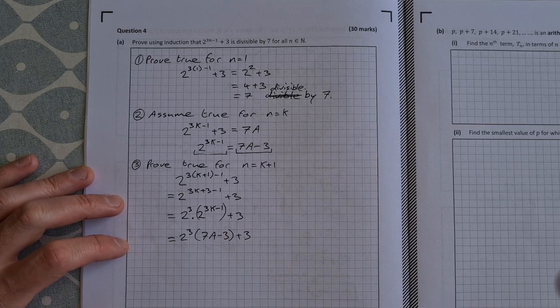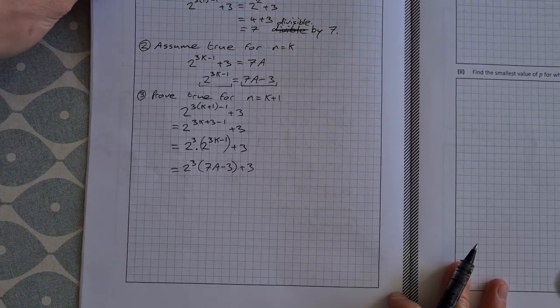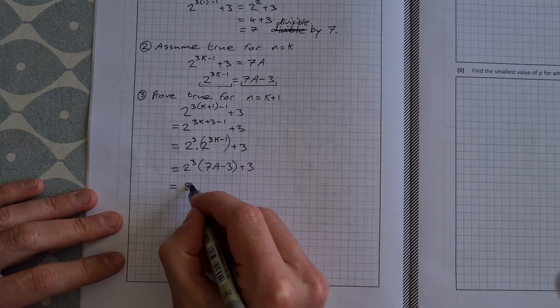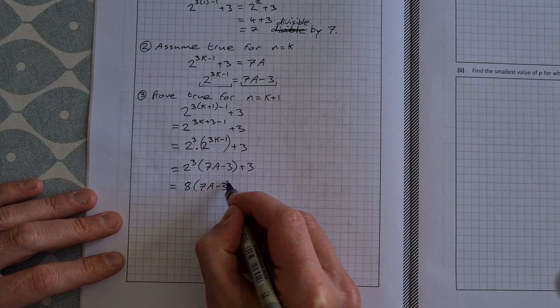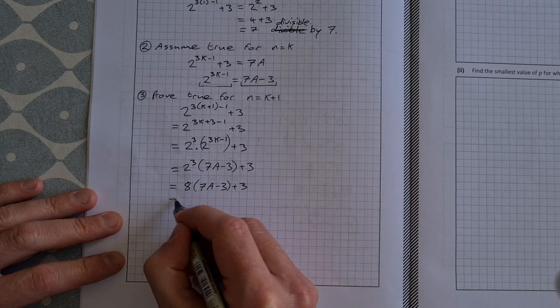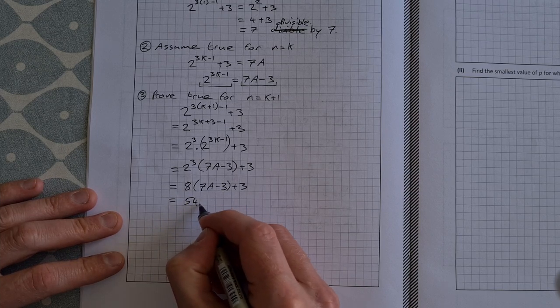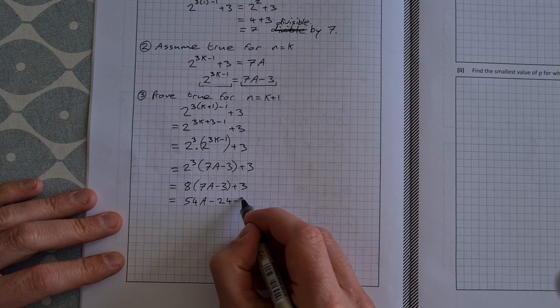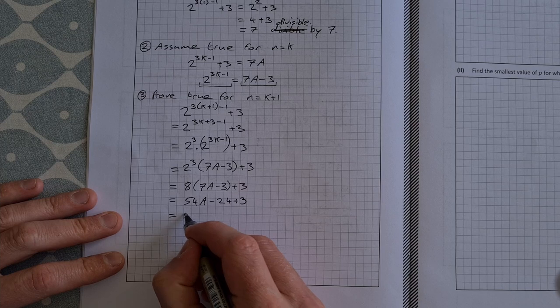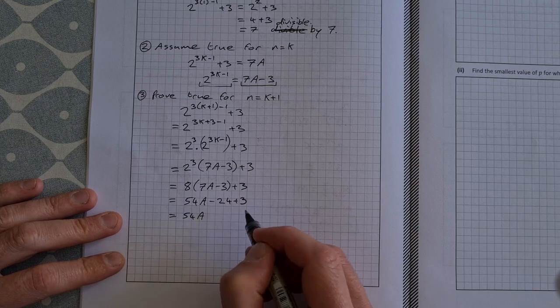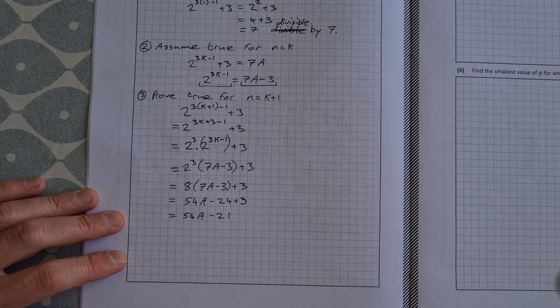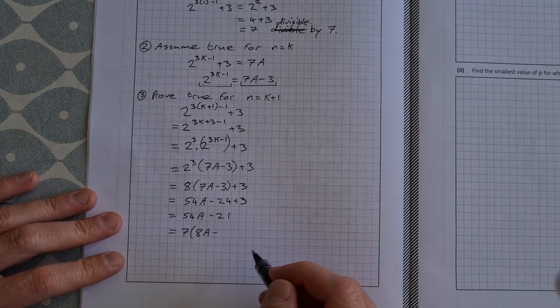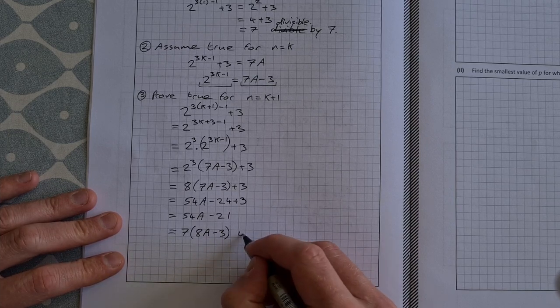And now all I need to do is show that this here has a factor of 7. So 2 to the power of 3, 2 to the power of 3 is 8. So that's 8 by 7a minus 3 plus 3. Multiply out the brackets there. 8 by 7 is 56a. 8 by minus 3 is minus 24 plus 3. That's equal to 56a minus 24 plus 3 is minus 21. And I can take 7 out as a factor of that. That's equal to 7 times 8a minus 3, which is divisible by 7.